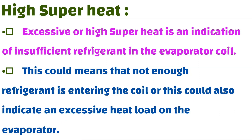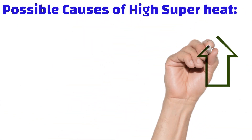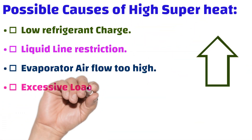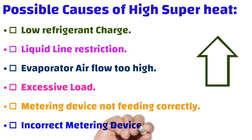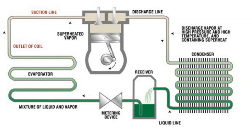High superheat: excessive or high superheat is an indication of insufficient refrigerant in the evaporator coil. This could mean not enough refrigerant is entering the coil, or it could indicate an excessive heat load on the evaporator. Possible causes of high superheat: one, low refrigerant charge; two, liquid line restriction; three, evaporator airflow too high; four, excessive load; five, metering device not feeding correctly; six, incorrect metering device.